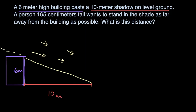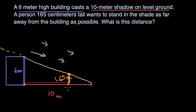Let me just do everything in meters so that we don't get confused. So 1.65 meters — this isn't drawn to scale — puts us right about here. So this distance is 1.65 meters; that's the person's height. There's their head, their arms, their feet. The question is: what is this distance? They want to go as far away from the building as possible. If they go any further, their head's going to dip into the sun and they won't be fully in the shadow. So that distance is X.